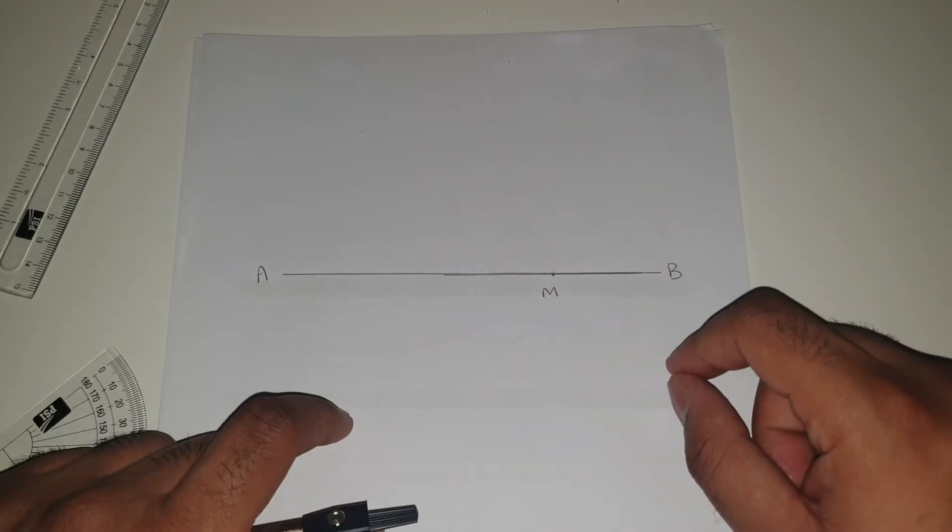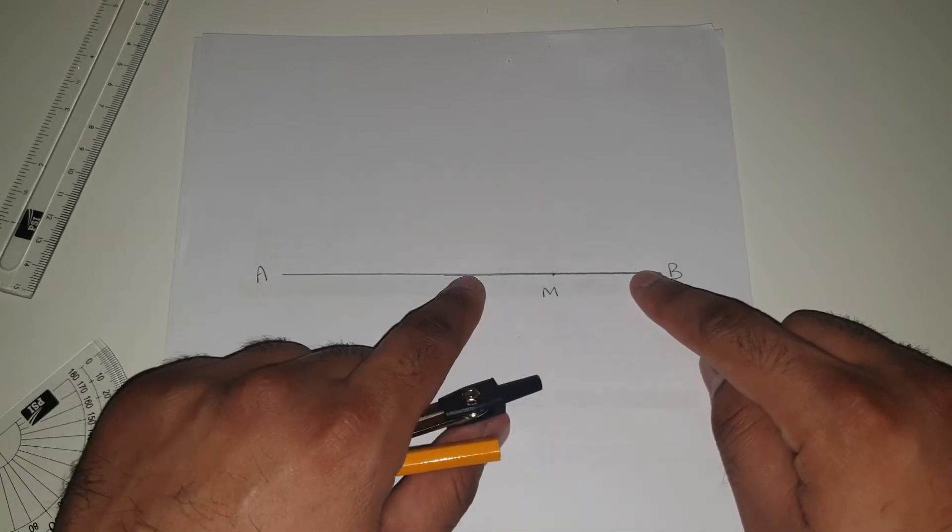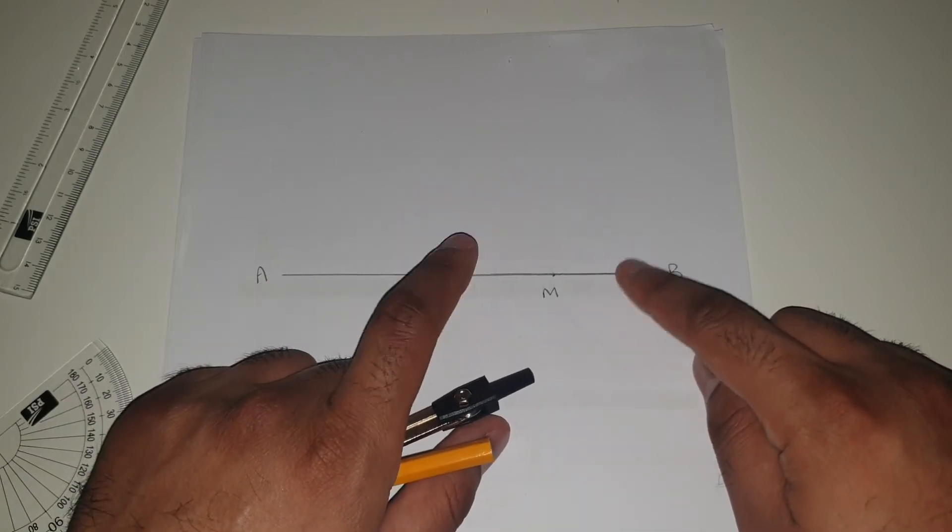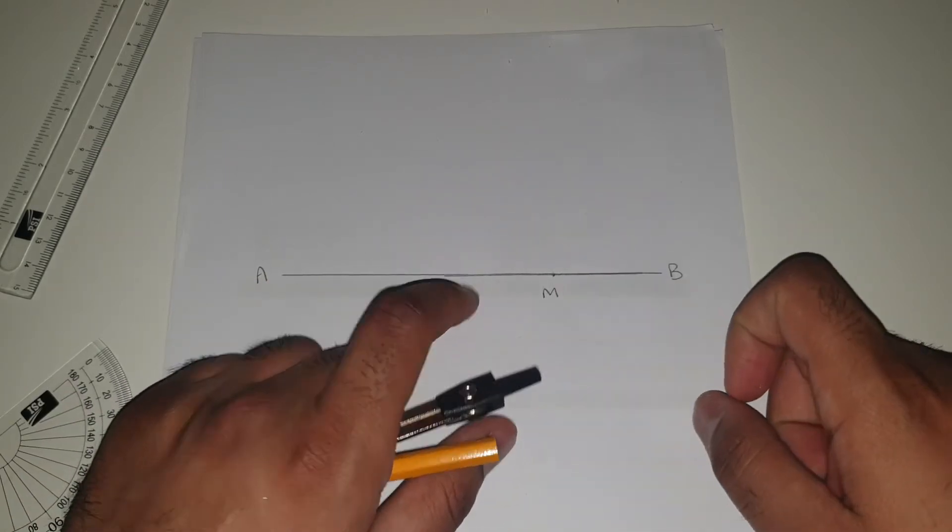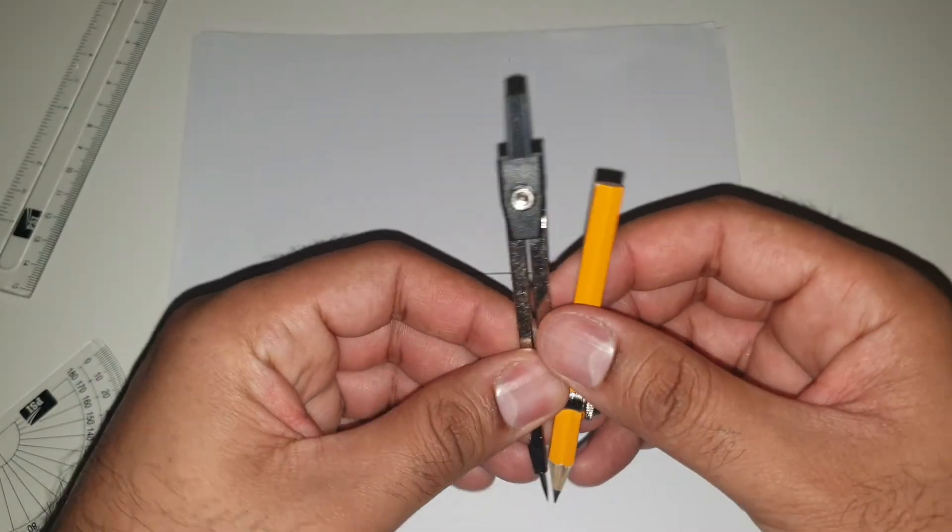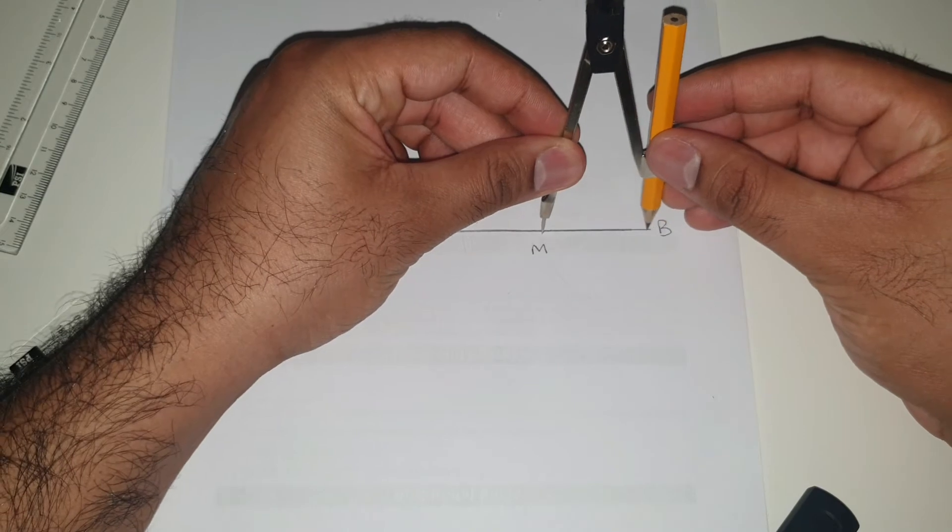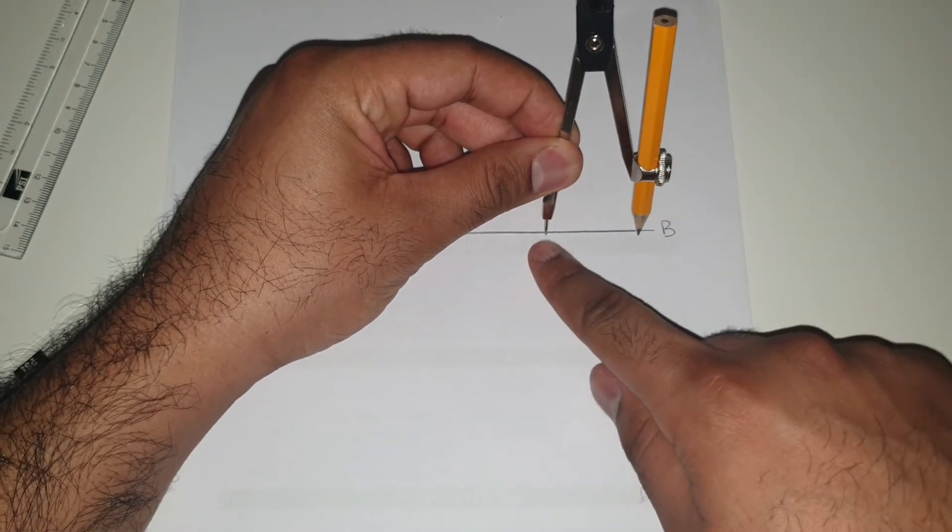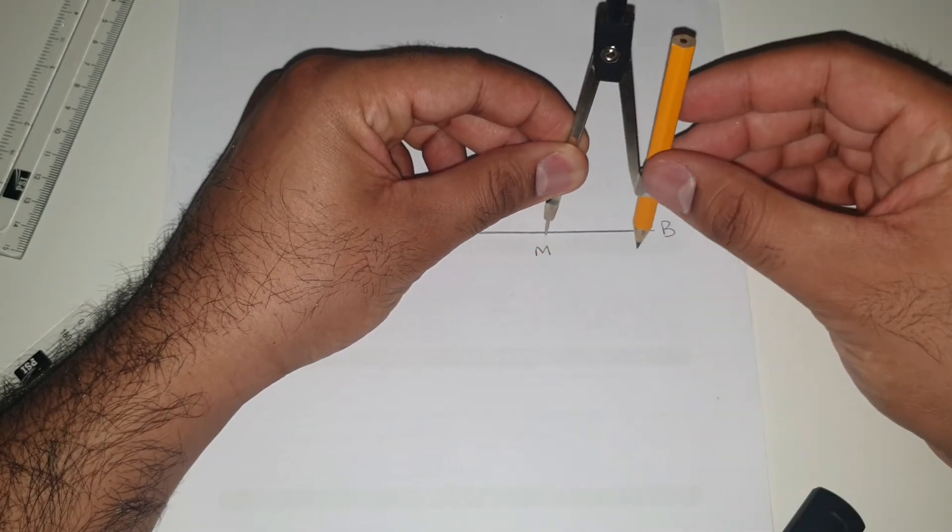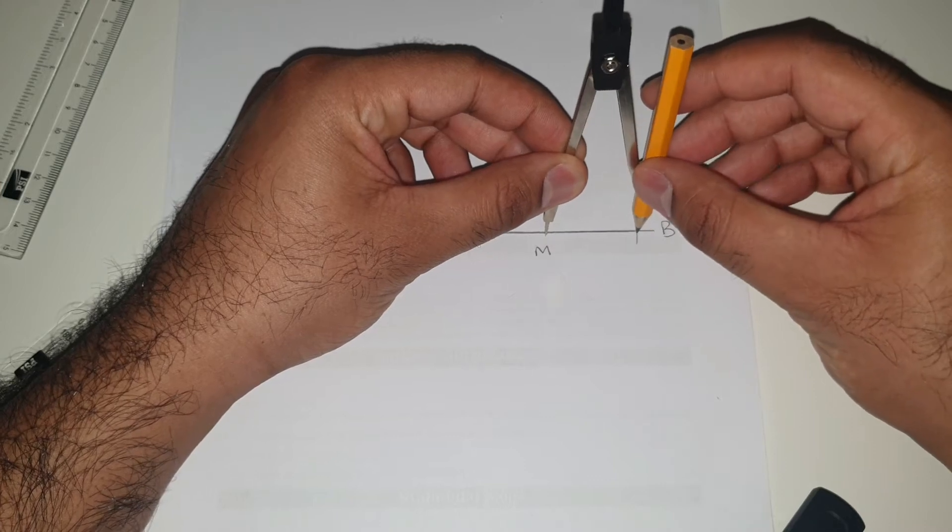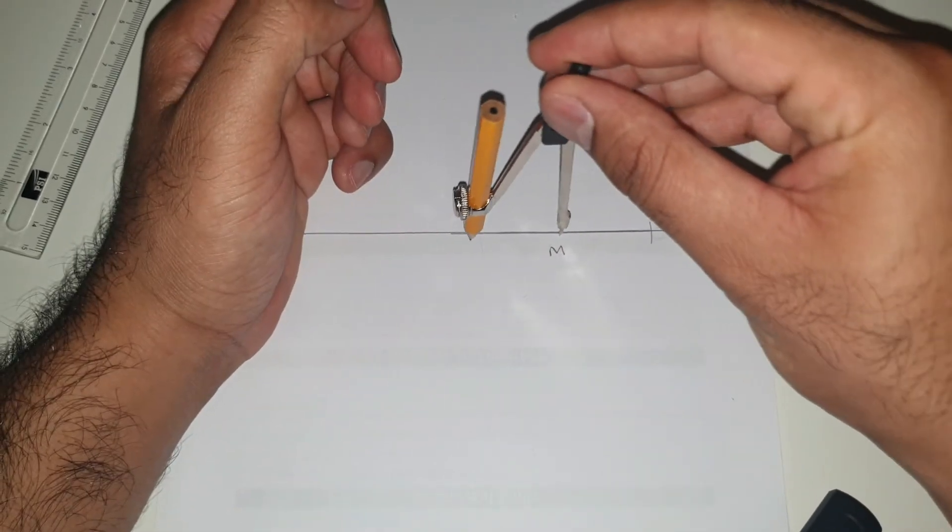So the first thing that we're going to do is bring these two points closer together so that they are equal distance from M. How do we do that? Well, what we're going to do is take our compass and go just over halfway between M and B. We're just going to intersect the line on both sides.